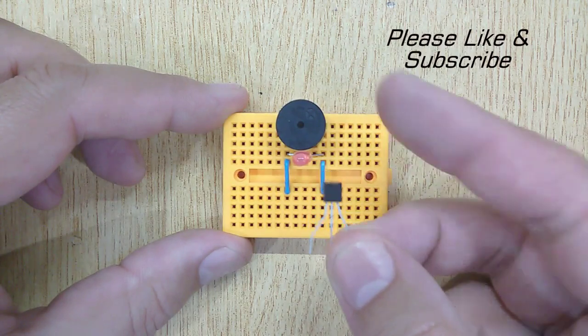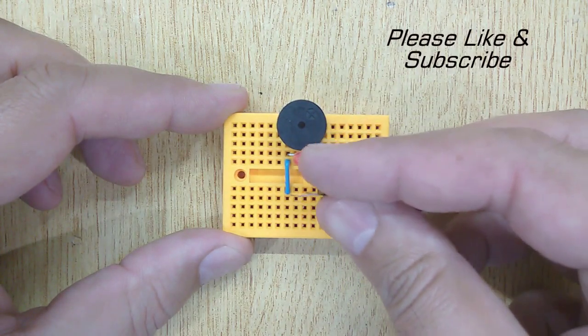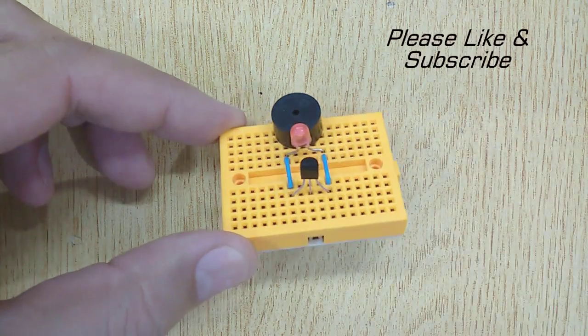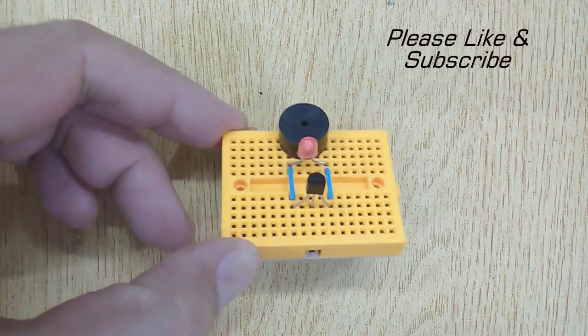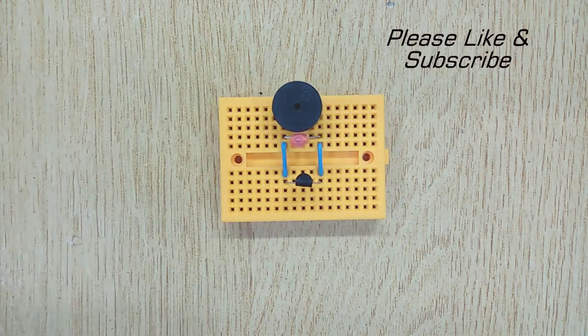And at last, connect the first pin of the UM66 IC with the first jumper wire, and connect the third pin of the UM66 IC with the second jumper wire.